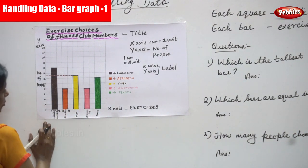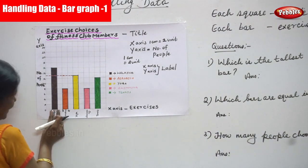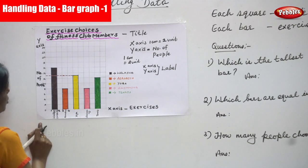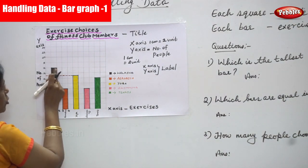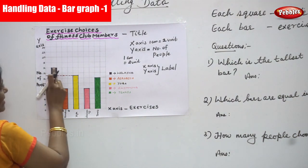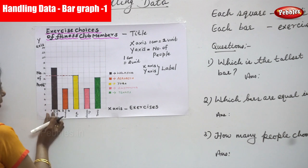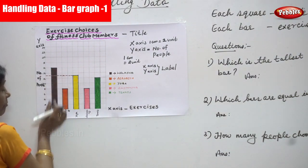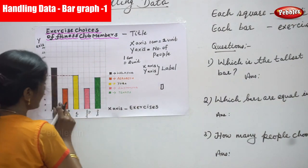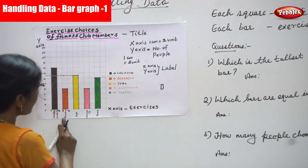First, we draw the bar graph starting from the x-axis to y-axis. Walking — 16 people chose walking. So from the x-axis up to 16 on the y-axis, I draw a vertical bar. This is called a vertical bar graph. I shaded it in brown color.